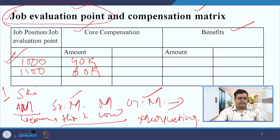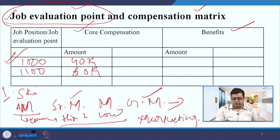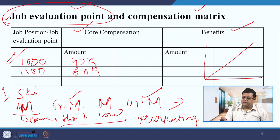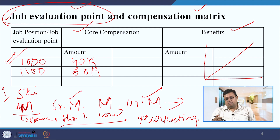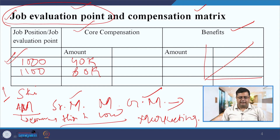You can analyze job worth and compensation together. You can make a chart with annual salary and job worth, then add a market line showing how much each job is being paid in the market, and calculate various types of ratios. We will discuss this further in the next slide.